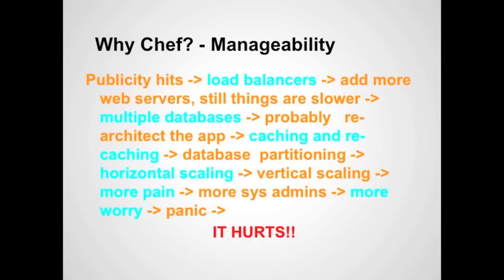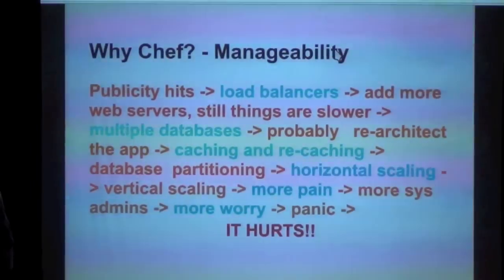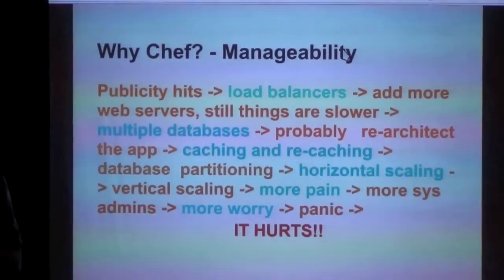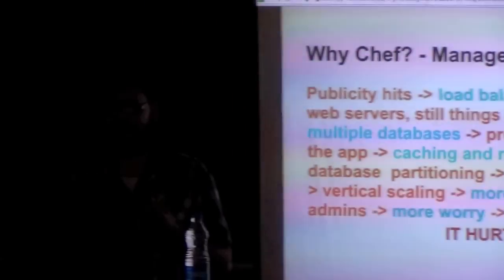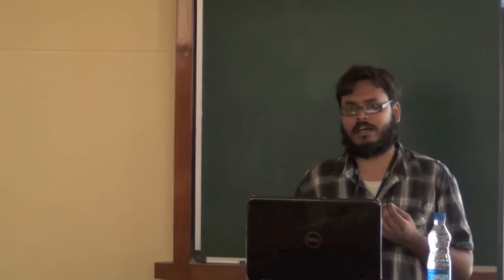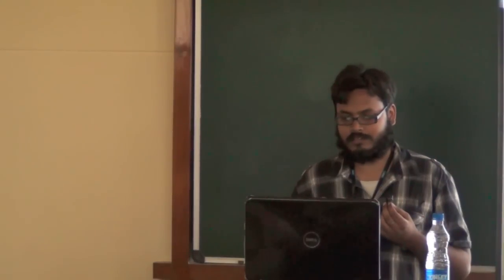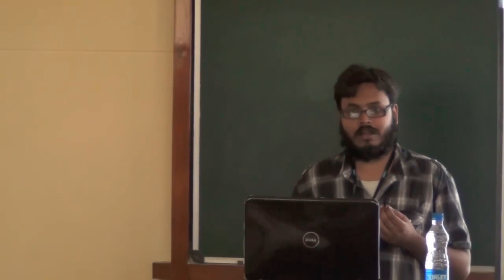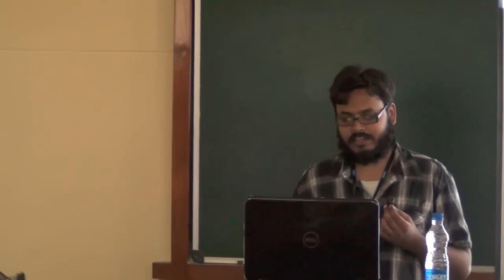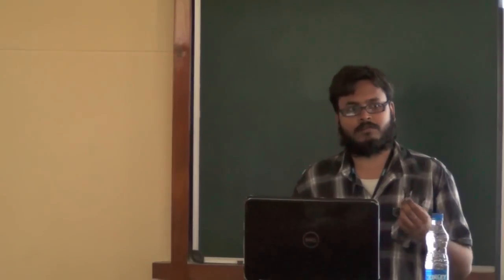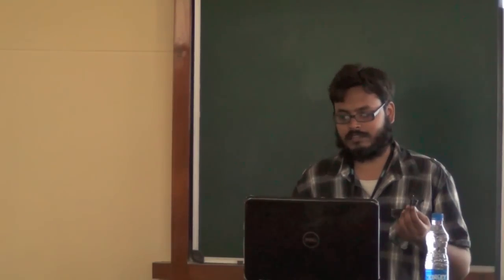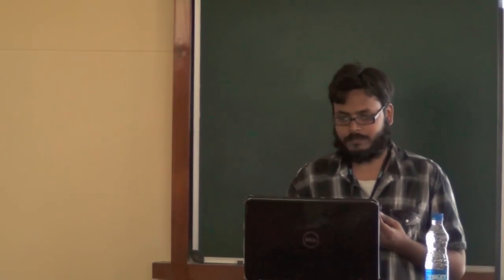The second factor is manageability. Say you have a cool app, publicity hits, you add load balancers like Nginx which Facebook does, you add more servers, still things are slower. You add multiple databases, think of re-architecting the app, optimizing database queries, caching using memcache, database partitioning, horizontal scaling, vertical scaling, buying new servers — it's all more pain. You need to invest in more sys admins, provide them resources — it all hurts. So use Chef, or one of these provisioning tools. Chef is one such example; you can use Puppet or Salt.